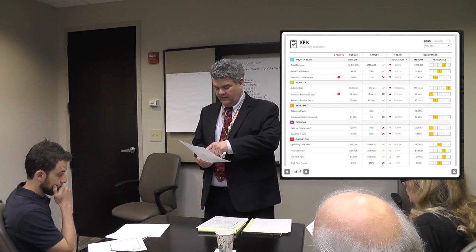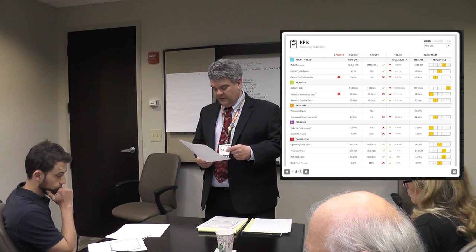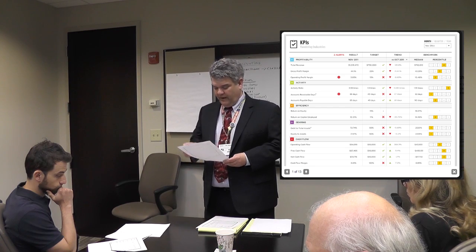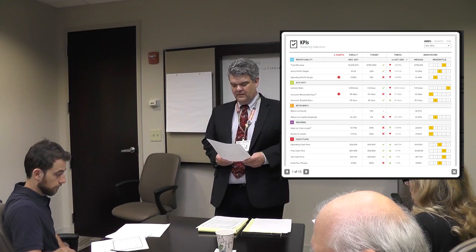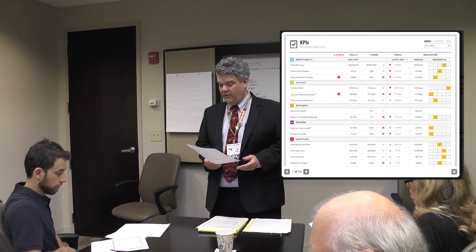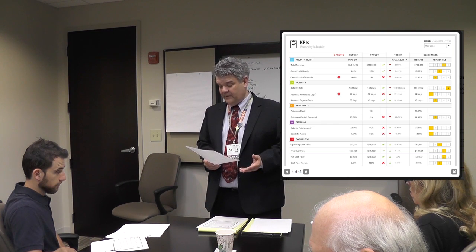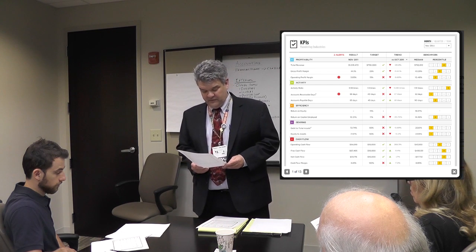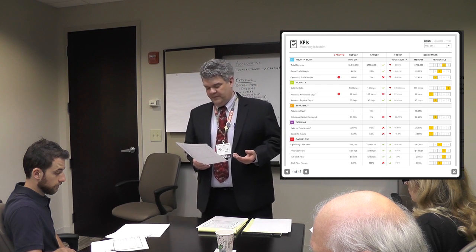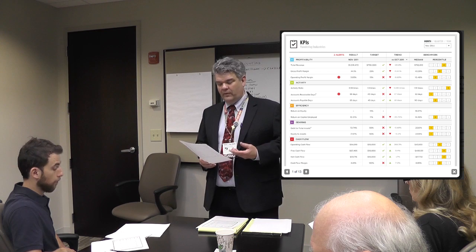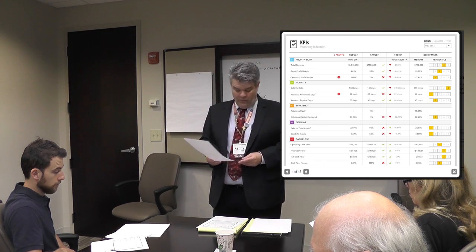Looking at the first column, it names the type of indicators being used. I'll come back to alerts. The results column shows the value of the indicator. The target is what we are shooting for. In the far right-hand column is the benchmark — a percentile ranking of how our indicator for this company compares to other companies in the same industry. Back to the second column from the left — the alert column: if the indicator is not where we want it to be and it's showing a problem, we get a red dot, a red light indicating a problem, and we can devote more attention to that area.